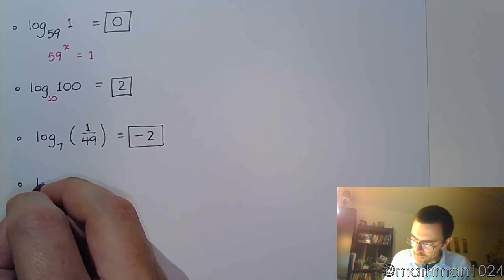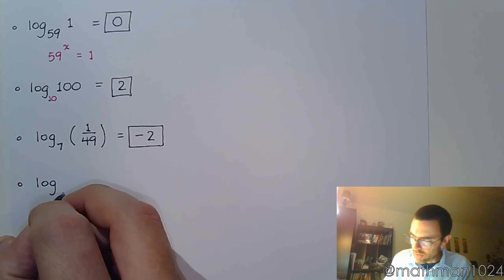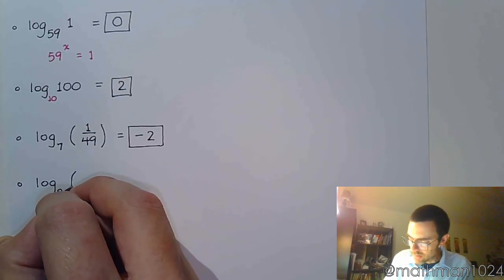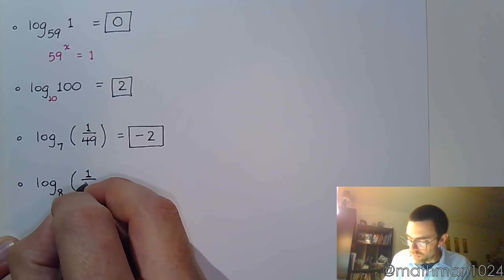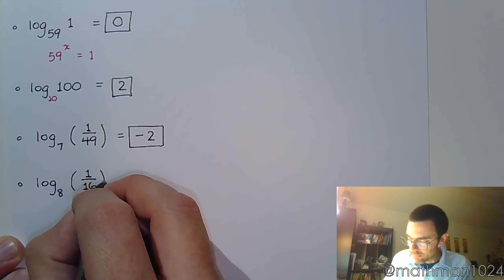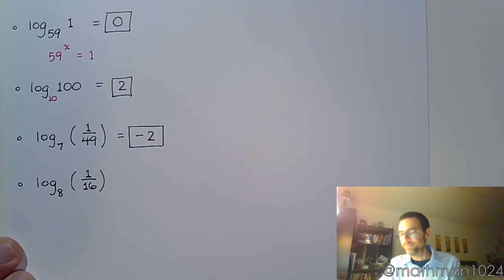And, let's see what happens here. Log base 8 of 1 over 16. Hmm. Well, we have a couple of ways of looking at this. Right? So, we could see this as a quotient. We could see this as doing a change of base theorem. So, it's really up to you.